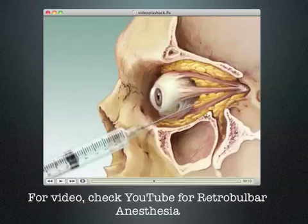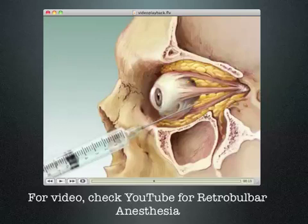There is a video of the retrobulbar anesthesia technique. The needle is introduced at the junction of the lateral one-third and medial two-thirds inferolaterally, initially parallel to the floor of the orbit, and then directed into the retrobulbar space. The anesthetic agent is injected into the space behind the globe and inside the cone — the intraconal retrobulbar space — and generally about 3 to 5 ml is adequate for complete intraocular anesthesia and to arrest most of the extraocular muscle movements.